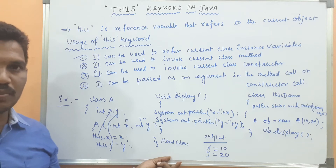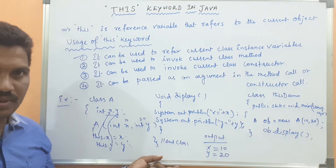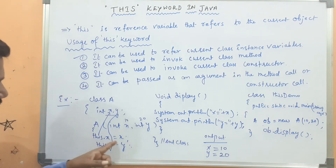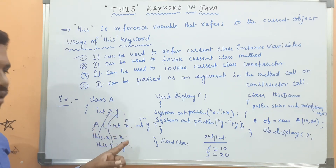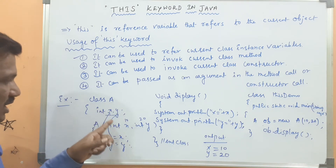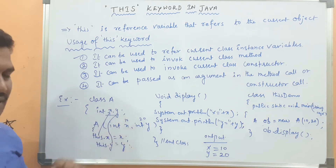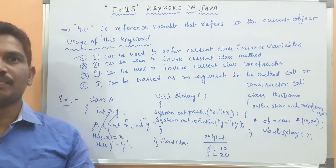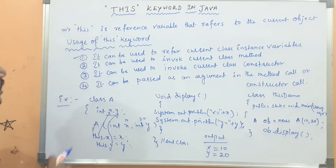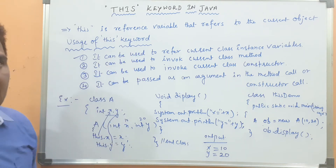This is the first use of 'this' keyword: it can be used to refer to the current class instance variable. This resolves the conflict between instance variables and local variables. That is one of the uses of the 'this' keyword.